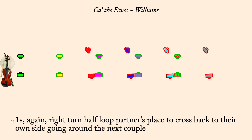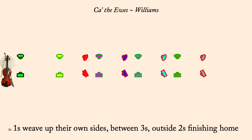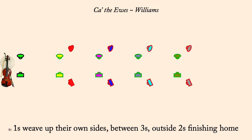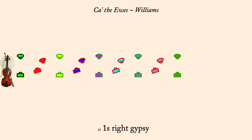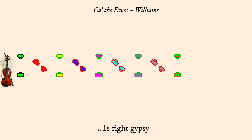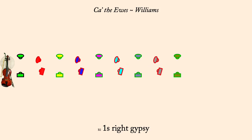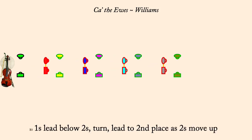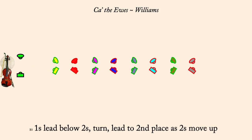One's weave up, inside threes, outside twos, to home. One's right gypsy. One's lead down and back to second place. Twos move up.